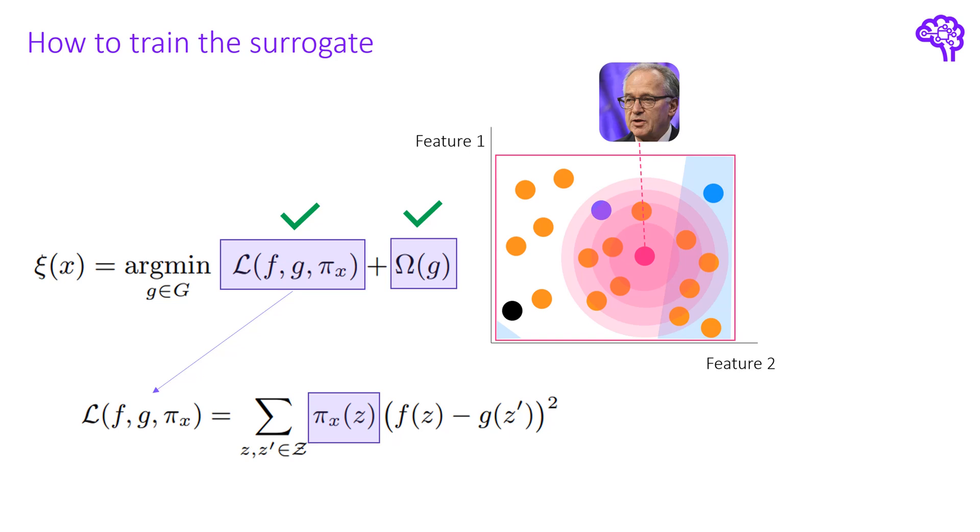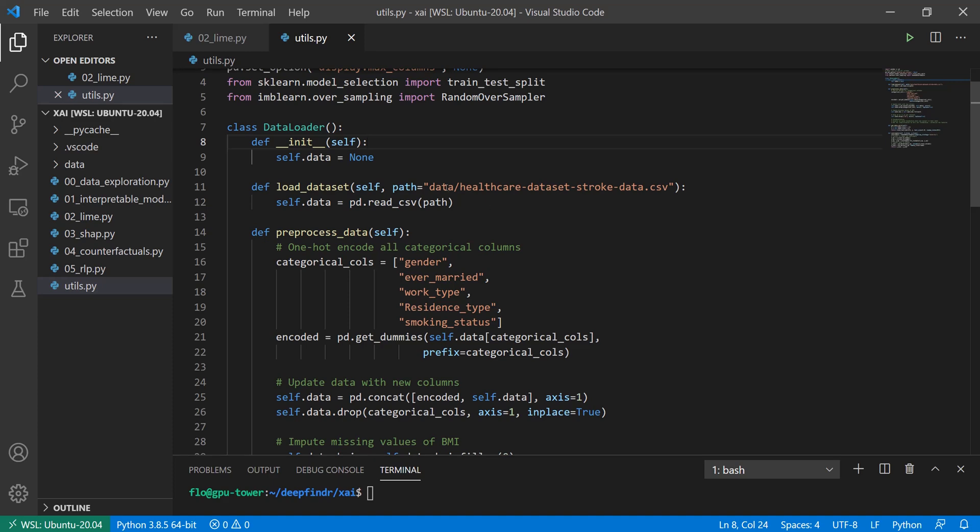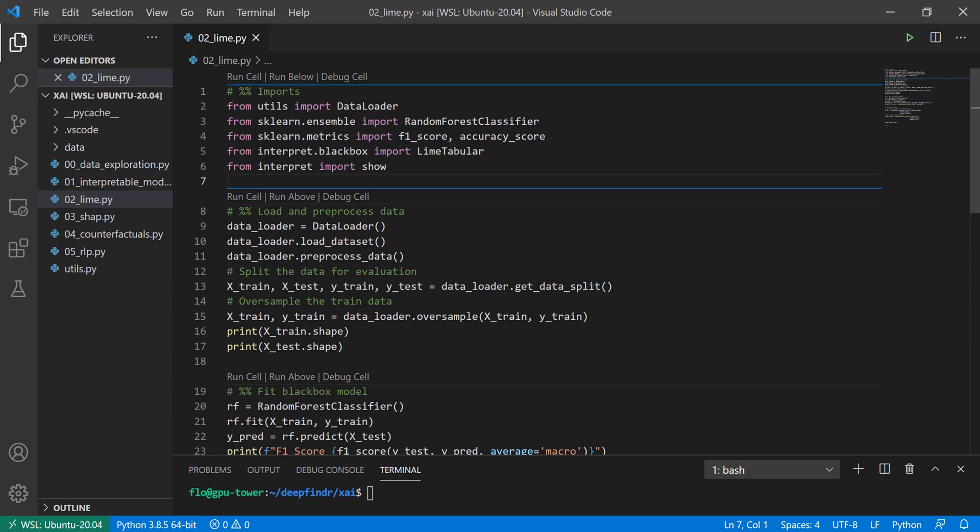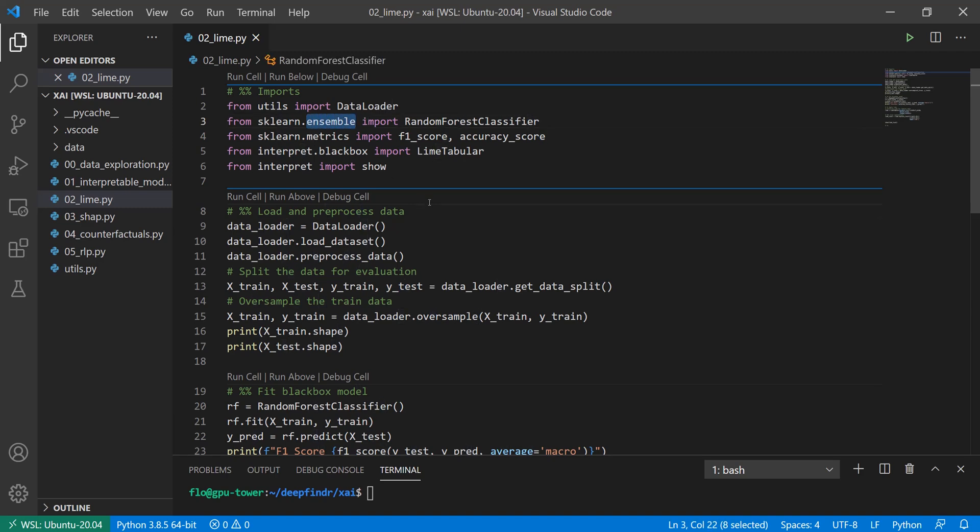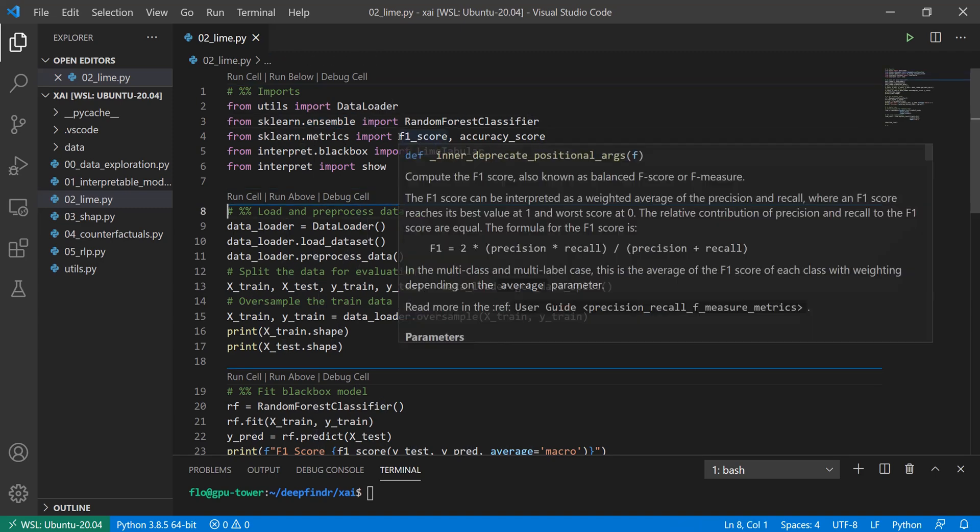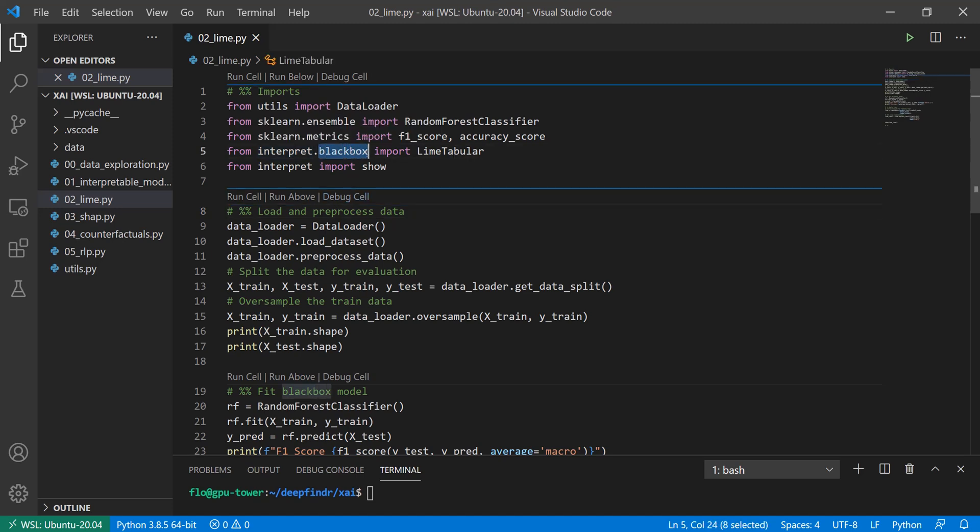Now it's time for some code. Let's have a look at how we can apply LIME on our dataset. Okay, so here we are back in VS Code. First we import a couple of things. That data loader I've shown in the last video, which simply fetches our data, which is a CSV file, in a tabular format. And then the random forest classifier, which will serve as our black box model in this case, as it's an ensemble model that cannot be easily interpreted. Then we import some metrics, like the F1 score and the accuracy score. As we have an imbalanced dataset, it makes sense to also look at recall and precision. Then we import LIME tabular, which is LIME for tabular data, and it comes from Microsoft's interpret library. And as you see, it's for black box algorithms. And finally, we import the show function, which helps us to create this interactive plot.